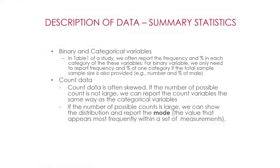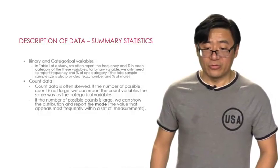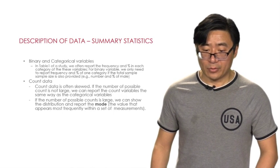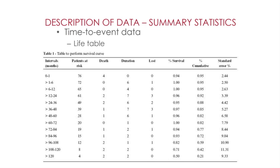Count data is often skewed. If the number of possible counts is not large, we can report count data the same way as categorical variables — that is, reporting frequency and proportion in each category. Sometimes the possible number of counts is large; in that situation, we can show the distribution and report the mode, which is the value that appears most frequently within a set of measurements.